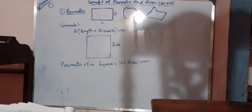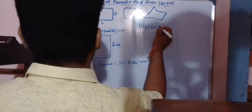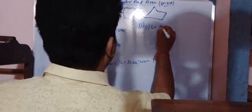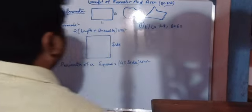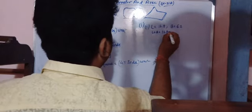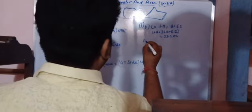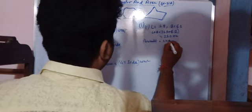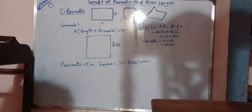Question 1: Length L = 16.8 cm and Breadth B = 6.2 cm. First, length plus breadth = 16.8 + 6.2 = 23 cm. Then perimeter = 2 into 23 = 46 centimeter. The rest of the problems should be done by this same process.